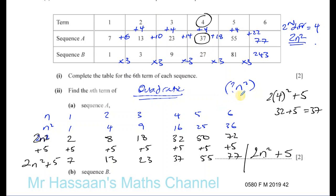There are other ways people use to do these questions, like simultaneous equations and memorizing patterns. But I much prefer doing it like this — the only thing you really have to memorize is that whatever the second difference is, you take half of it as the coefficient, and then you compare to find the rest. That's part A done.